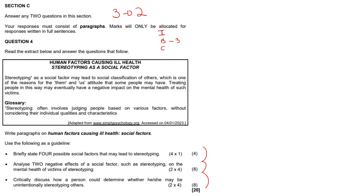Us versus them - treating people in this way may eventually have a negative impact on the mental health of such victims. Glossary here: what is stereotyping? It often involves judging people based on various factors without actually considering who they are as individuals.